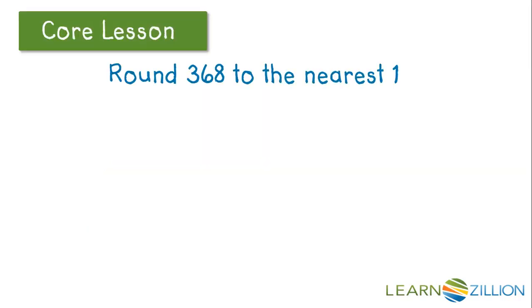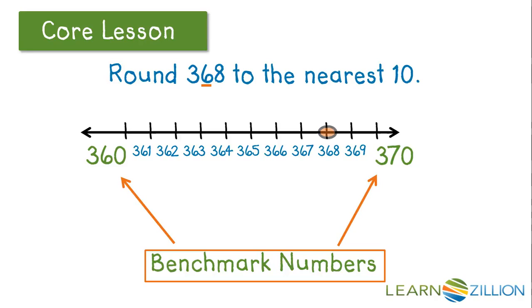Now let's round 368 to the nearest ten. This time I'll focus on the six because it's in the tens. 368 falls in between 360 and 370 when we count by tens. These are our benchmark numbers.